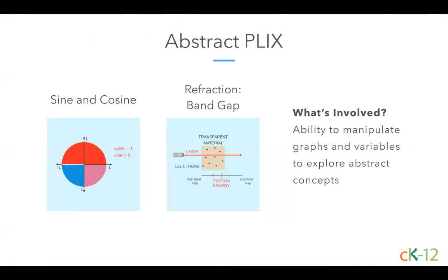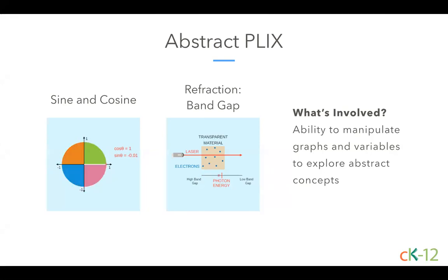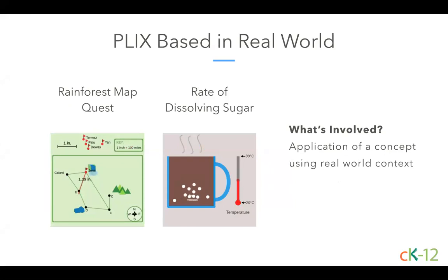In many PLIX, students can manipulate graphs, diagrams, or variables. In the Sine and Cosine PLIX, students explore how the values of trig functions relate to a given angle. In the Refraction Band Gap PLIX, users change the band gap of a substance to see if a photon can fit through. As a lesson, you could have students screenshot a few different states for a graph or set of variables and explain what changed. Some PLIX use real-world contexts: in the Rainforest Map Quest PLIX, students can locate villages on a map using a scale; in the Rate of Dissolving Sugar PLIX, students observe what happens to a sugar cube in tea as the temperature changes. Try having students brainstorm other applications of a concept or even design their own PLIX.